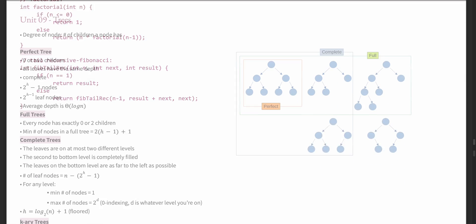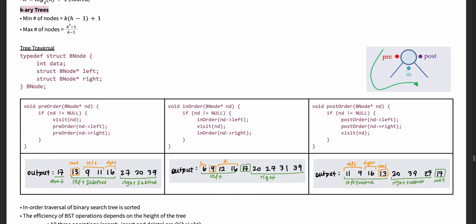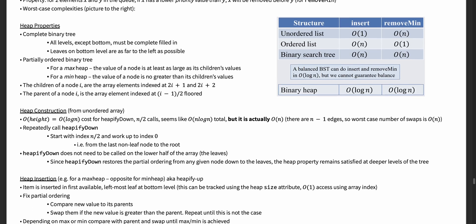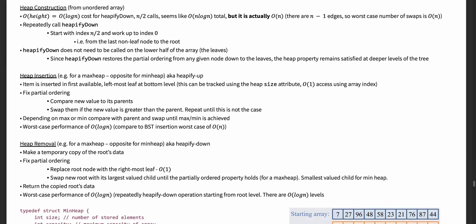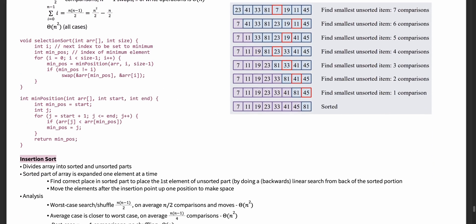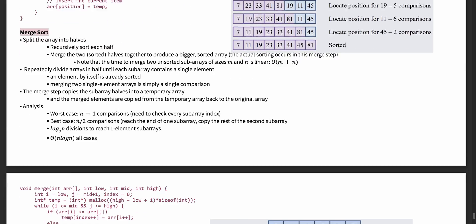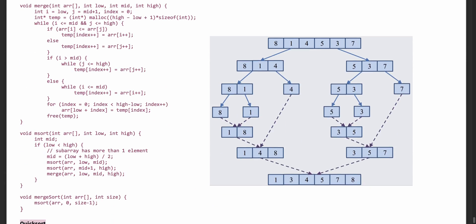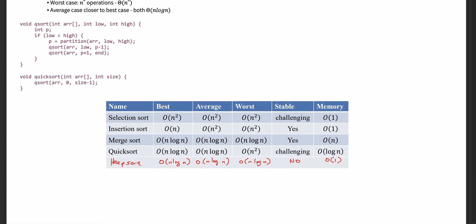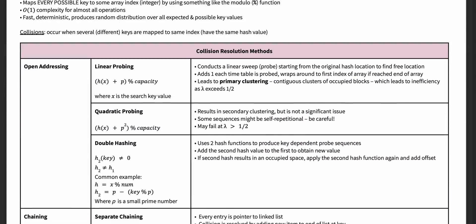In the last third of the course, you'll learn about trees, priority queues, binary heaps, different sorting algorithms, and hash tables. Trees, priority queues, and binary heaps are data structures with their own properties, traversal methods, and runtime analyses. For the sorting unit, you'll analyze different sorting algorithms — how they work, their runtime complexities, and which situations each is best in. In the hash tables unit, you'll learn how they work, different methods to probe for open addresses, and the efficiencies of these probing methods.